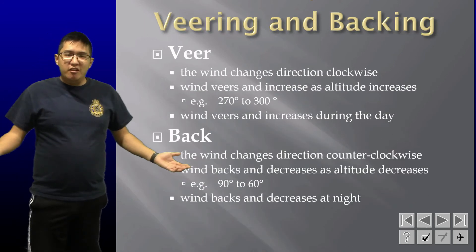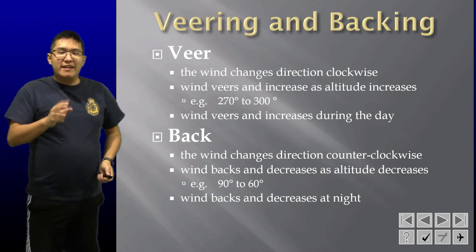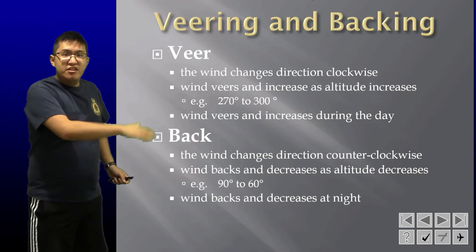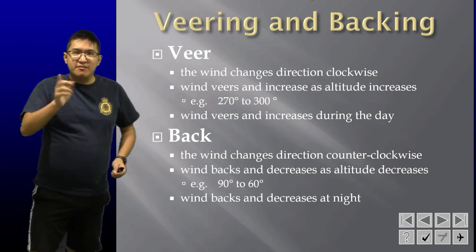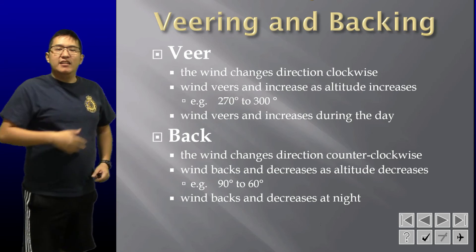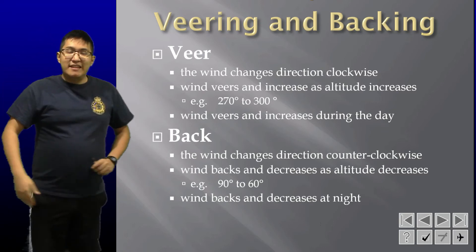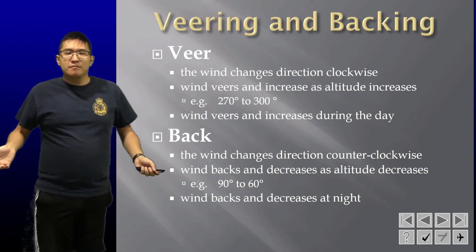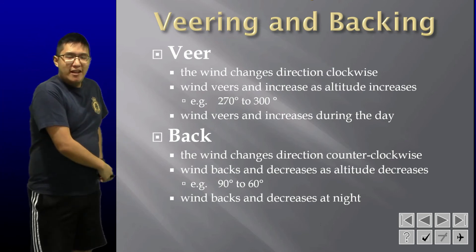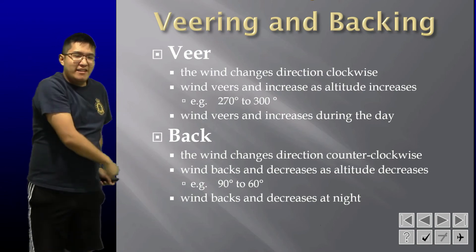Now for the formal introduction of veering and backing. Veering is a change in direction clockwise — wind veers at increasing altitude. As you climb, your winds will tend to veer and increase in strength, which is really important for flight planning. They also veer and increase during the day. Backing is a change in wind direction counterclockwise — as you descend, winds will tend to back and decrease as altitude decreases. They also back and decrease at night. Think of it like a little dance: as you go up in altitude, winds veer and increase; as you decrease altitude, they back and decrease.